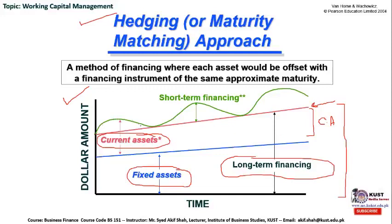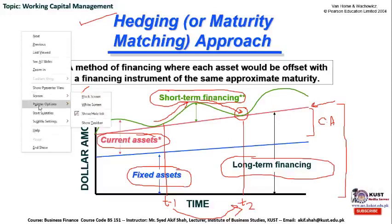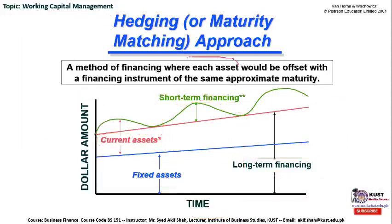The green graph shows jumps and drops over time, depicting the seasonal demand for current assets. When the season is at its peak, the company can borrow a short-term loan for six months. When the season is over, the inventory is sold out and the debt obligation is paid off — so the seasonal short-term loan borrowed at time period one is paid out at time period two after six months. This is short-term financing to meet seasonal requirements. When the company matches each asset with the same approximate maturity, that is known as the hedging or maturity matching approach.